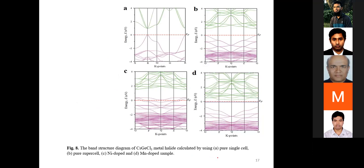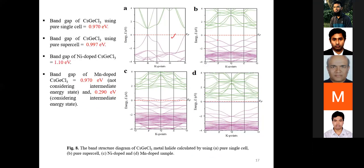The band diagram for cesium tin chloride shows results for the pure supercell, nickel-doped, and manganese-doped samples. This is again a direct band gap semiconductor. The band gap for nickel-doped cesium tin chloride is presented, and for the manganese-doped sample, if we consider the intermediate state, the band gap is 1.29 electron volts.